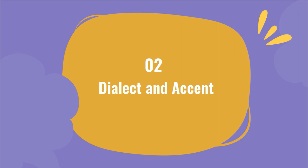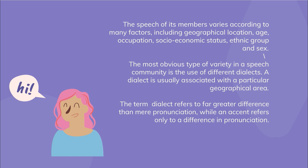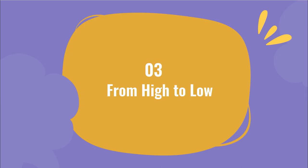Next is dialect and accent. Within a speech community there is considerable language variation. The speech of each member varies according to many factors including geographical location, age, occupation, socioeconomic status, ethnic group, and sex. The most obvious type of variety is the use of different dialects. A dialect is usually associated with a particular geographical area, such as the Geordie and Cockney dialects of English, spoken in Tyneside and London respectively. The term dialect refers to far greater differences than mere pronunciation, while accent refers only to a difference in pronunciation.